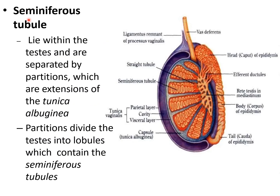The seminiferous tubule lies within the testis and is separated by partitions, which are extensions of tunica albuginea. In this image, this is the capsule — tunica albuginea — and its extensions divide the different seminiferous tubules into different lobules. This is one lobule of the testicle. There are many different lobules, all created by extensions of tunica albuginea.